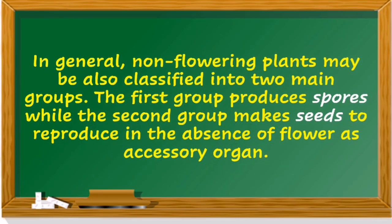In general, non-flowering plants may also be classified into two main groups: the first group produces spores, while the second group makes seeds to reproduce, in the absence of a flower as an accessory organ.